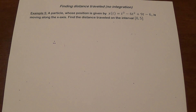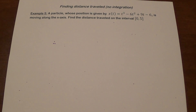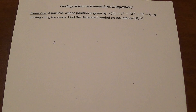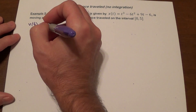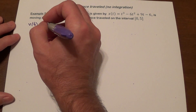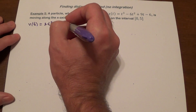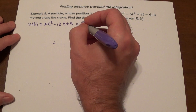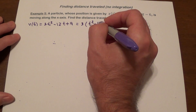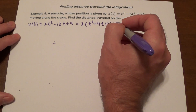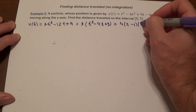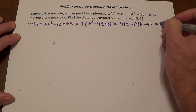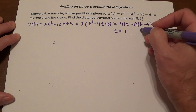Now we have a particle whose position is given by a cubic function moving along the x-axis, and we want to find the distance traveled on the interval from 0 to 5. The velocity function is 3t² - 12t + 9. Factoring out 3 gives t² - 4t + 3, which factors to 3(t - 1)(t - 3). Setting it equal to 0 gives t = 1 and t = 3.